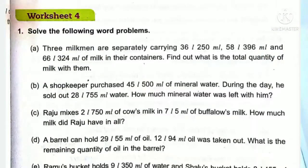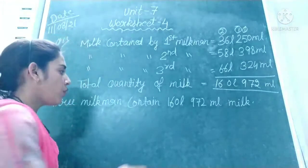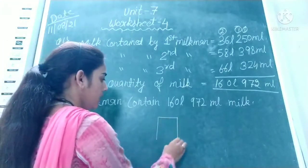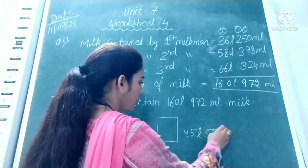Question number two, part B: a shopkeeper purchased 45 litres 500 millilitres of mineral water. During the day he sold out 28 litres 755 millilitres of water. How much mineral water was left with him? The shopkeeper has a total of 45 litres 500 millilitres of water.